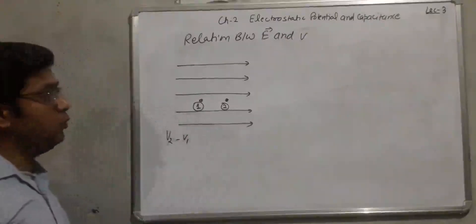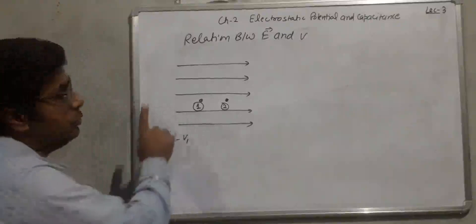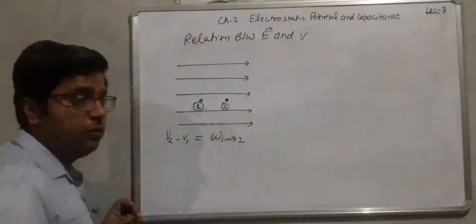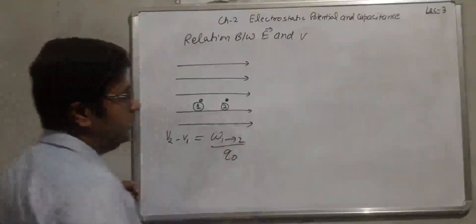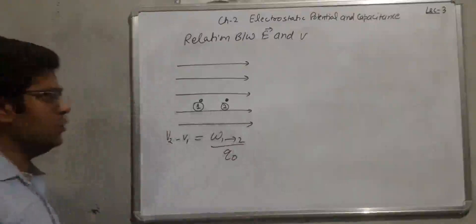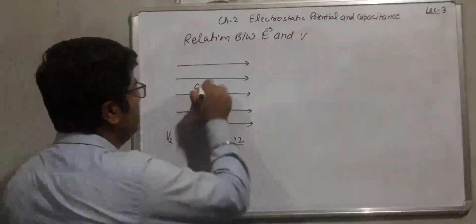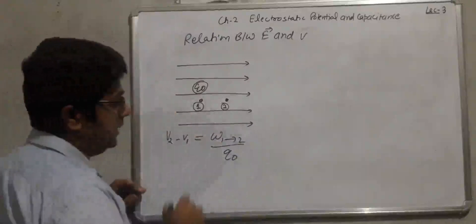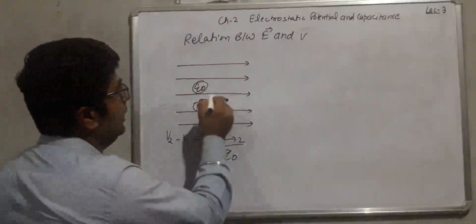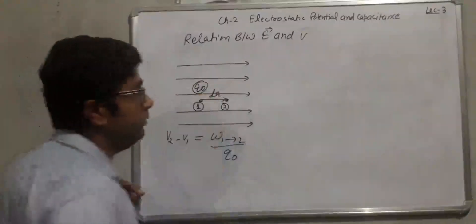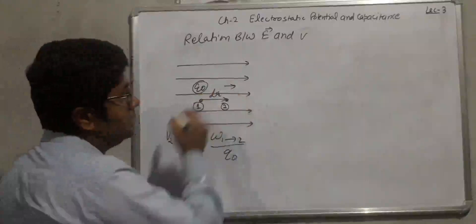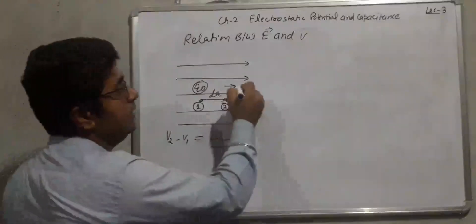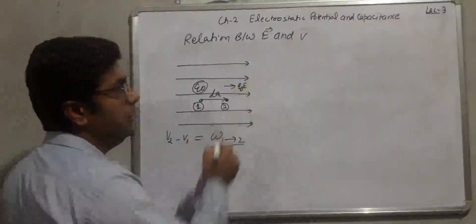It means we have to do work to take a charge particle from point 1 to point 2 — work done to take a charge particle from point 1 to point 2 per unit test charge. We are assuming a test charge and we want to take it from point 1 to point 2 by taking a displacement of dr. This is the direction of force applied by the electric field, which is Q0 into E.